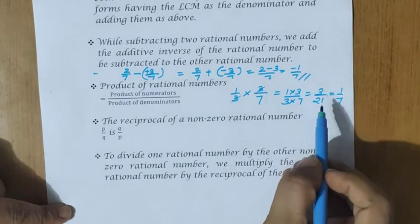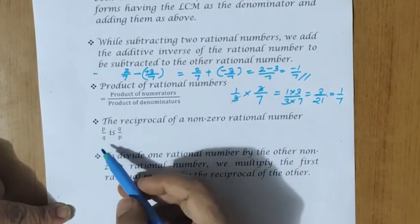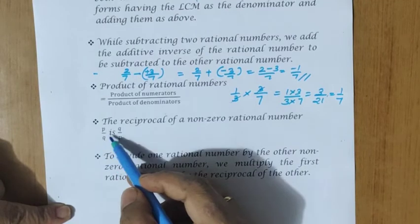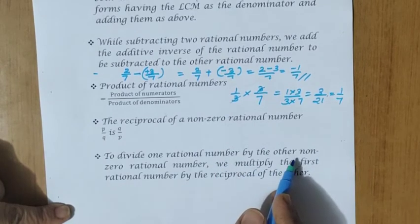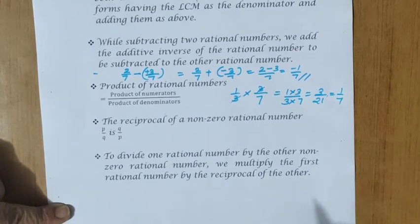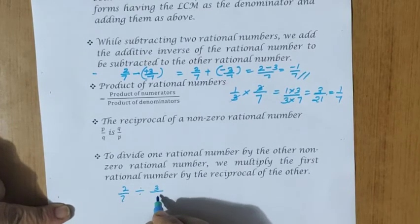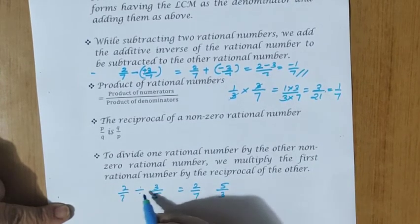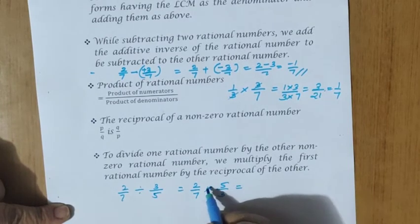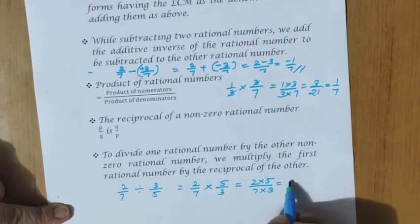The reciprocal of a non-zero rational number p by q is q by p — we interchange the numerator and denominator. To divide one rational number by another non-zero rational number, we multiply the first by the reciprocal of the second. For example, 2 by 7 divided by 3 by 5: we keep 2 by 7, take the reciprocal of 3 by 5 which is 5 by 3, and multiply. The answer is 10 by 21.